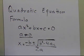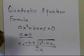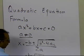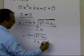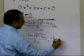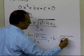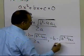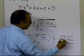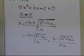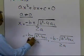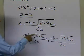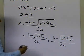It basically means that there are two roots. One root is minus b plus the square root of b squared minus 4ac, divided by 2a. And the other root is minus b minus the square root of b squared minus 4ac, divided by 2a. Those are the two roots of a typical quadratic equation. Once you find these values, you'll be able to find out what the two roots of the equation are.